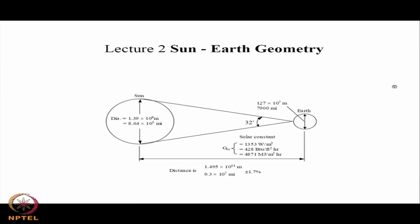The sun is of diameter 1.39 × 10⁹ meters, and it is at a distance of 1.495 × 10¹¹ meters from Earth, which varies by ±1.7%, depending upon the season. The sun subtends a small angle of 32 minutes or 0.54 degrees with the Earth. The solar constant G_SC is 1353 watts per meter square.